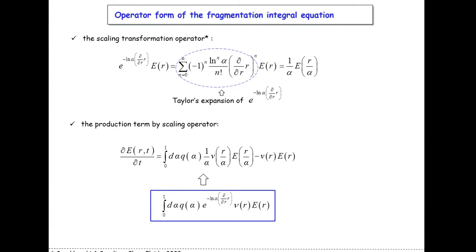Without going into full mathematical detail, I will show a few steps to get this equation. The first step is to reproduce the scaling transformation by the development of an operator acting on the function — this is nothing other than the Taylor expansion of the exponential function. We rewrite the scaling transformation using the scaling transformation operator, and then the production term in the integral fragmentation equation can be rewritten via the exponential scaling transformation operator.